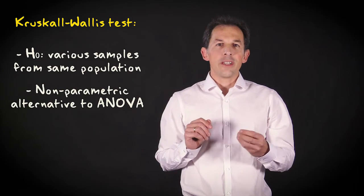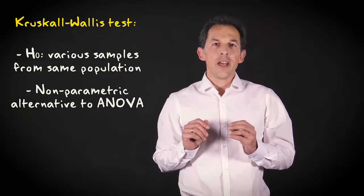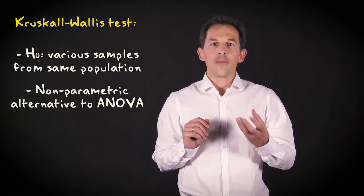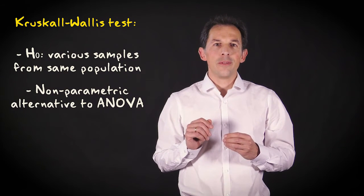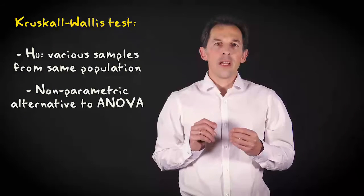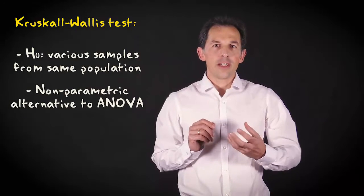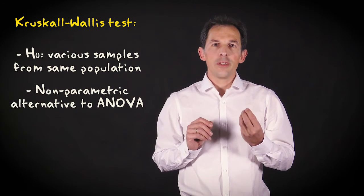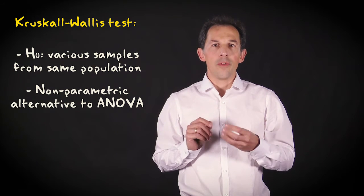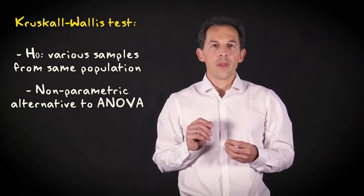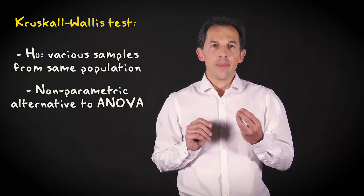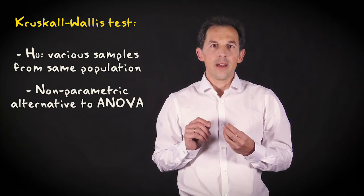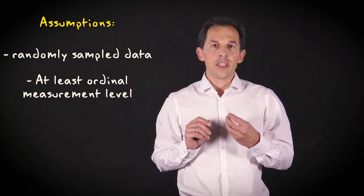The Kruskal-Wallis test evaluates the null hypothesis that various samples come from the same population distribution. It's a good alternative to an analysis of variance when sample sizes are small or you can't assume distributions that are close to normal for the different groups. The test assumes independent and identically distributed data with at least an ordinal measurement level.